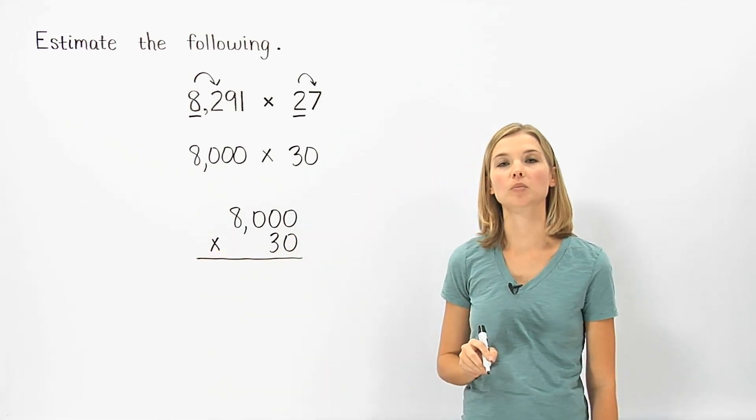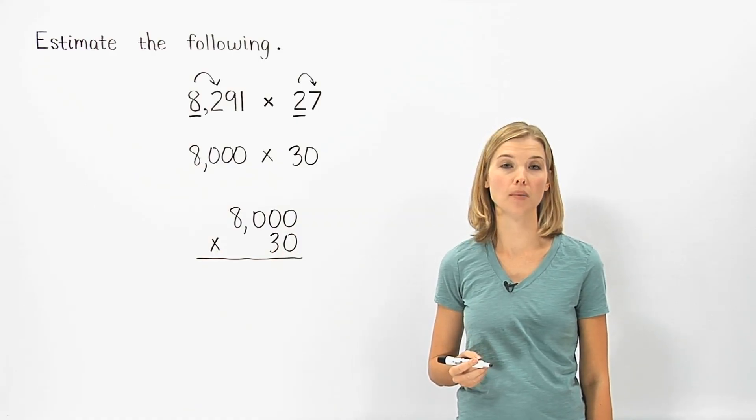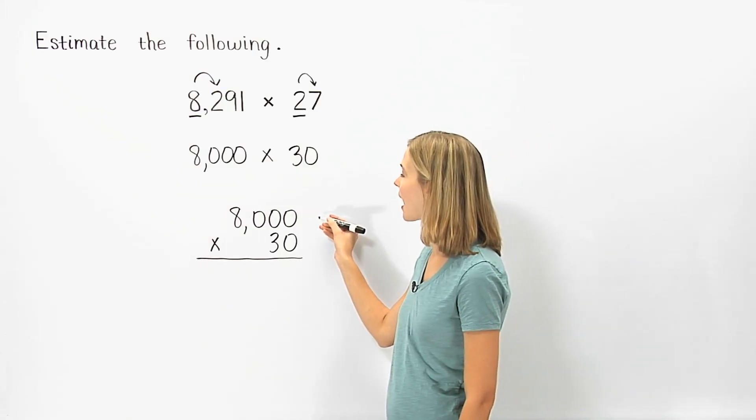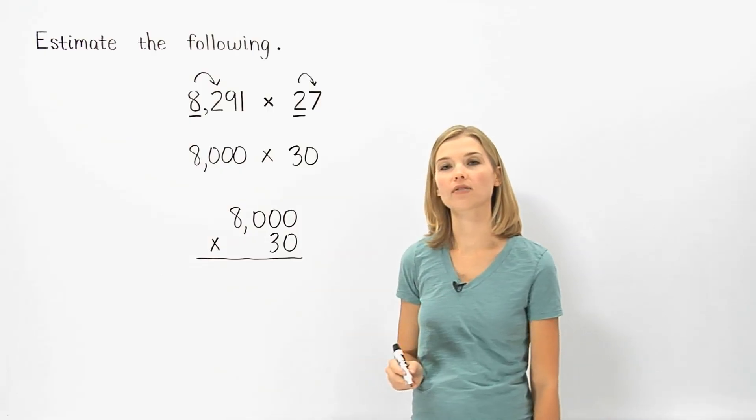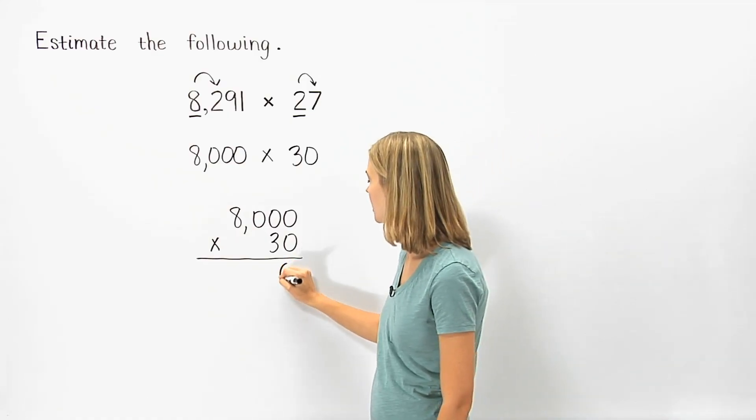An easy way to multiply numbers that end with zeros is to first count the total number of zeros at the end of the numbers. In this case, we have three zeros at the end of 8,000, and one zero at the end of 30. Since we have a total of four zeros at the end of the numbers, our answer will end with four zeros.